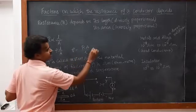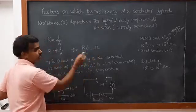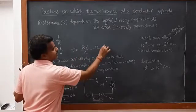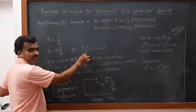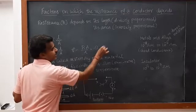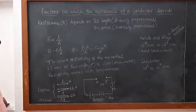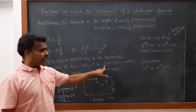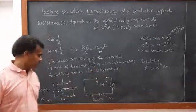The unit for resistance is ohm, for area is meter squared, and for length is meter. Cancelling units, resistivity has the unit of ohm-meter. So the resistivity has the unit of ohm-meter.